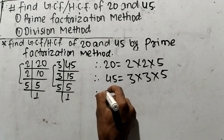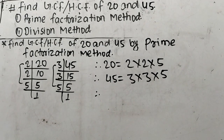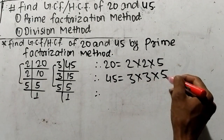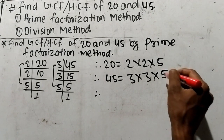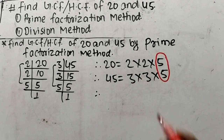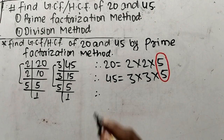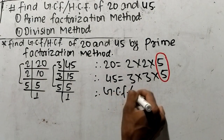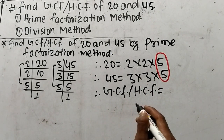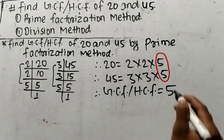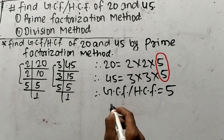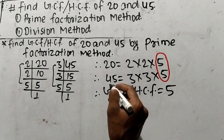From these prime factors, now we have to find out the common factors. As you look here, for 20 we have 2 and 2, and for 45 we have 3 and 3. And here is 5 and here is 5 — these both elements are common, so 5 is a common factor. The 2 and 3 are non-common factors. GCF or HCF is the product of all common factors only. Here the common factor is only 5, so 5 is the only common factor.